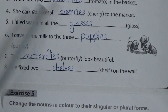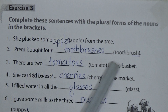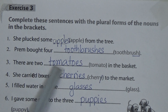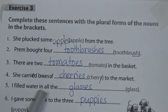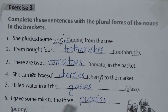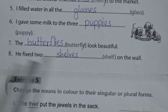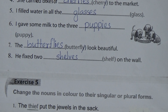Let's read the answers again. Number one: she plucked some apples from the tree. Number two: Prem bought four toothbrushes. Number three: there are two tomatoes in the basket. Number four: she carried boxes of cherries to the market. Number five: I filled water in all the glasses. Number six: I gave some milk to the three puppies. Number seven: the butterflies look beautiful. Number eight: he fixed two shelves on the wall.